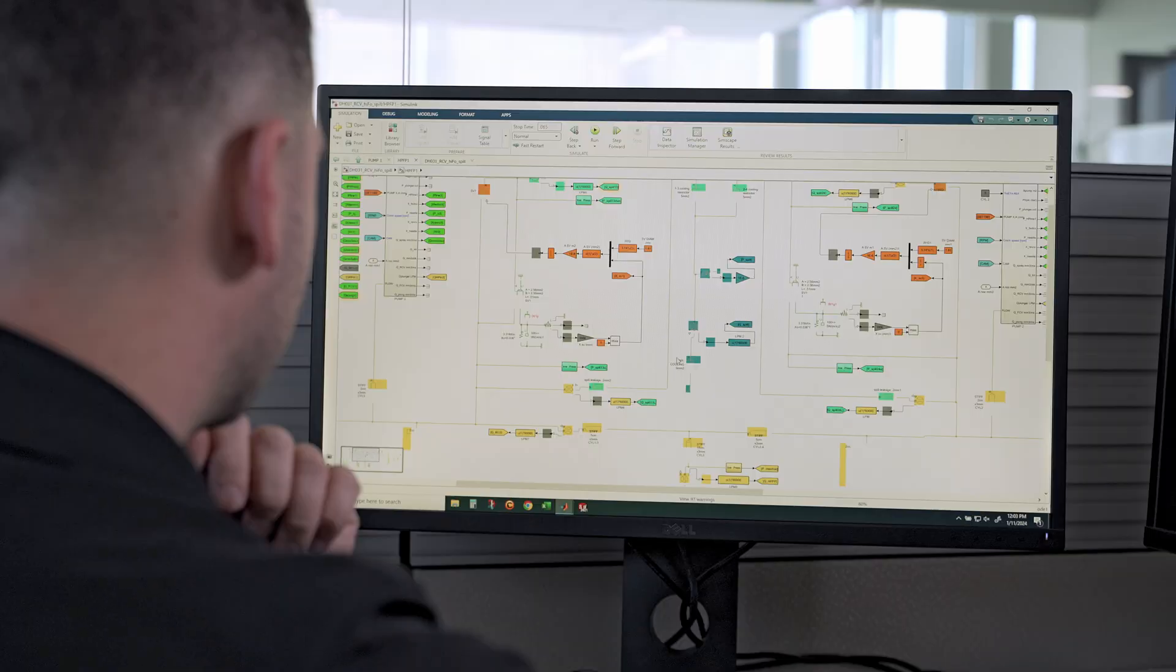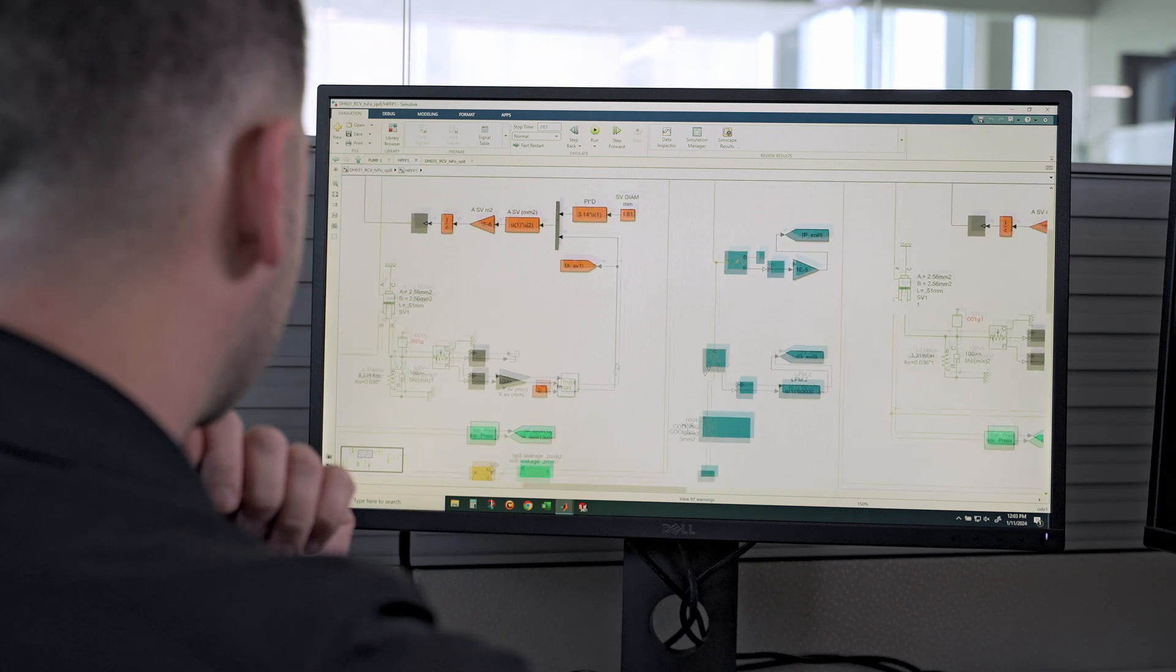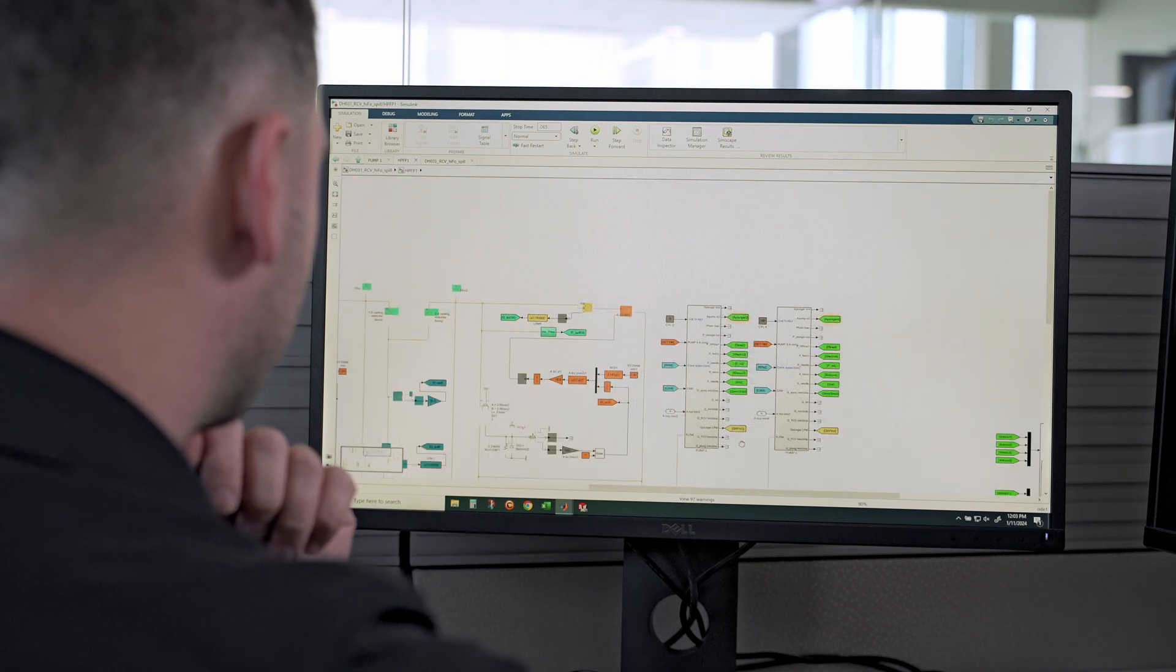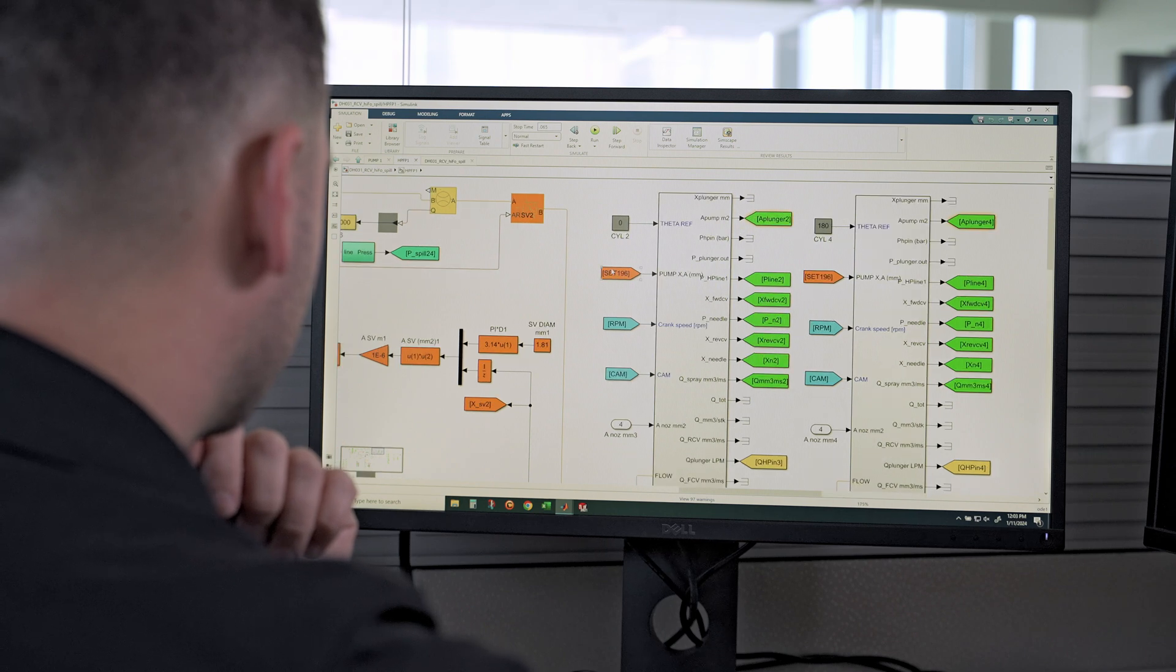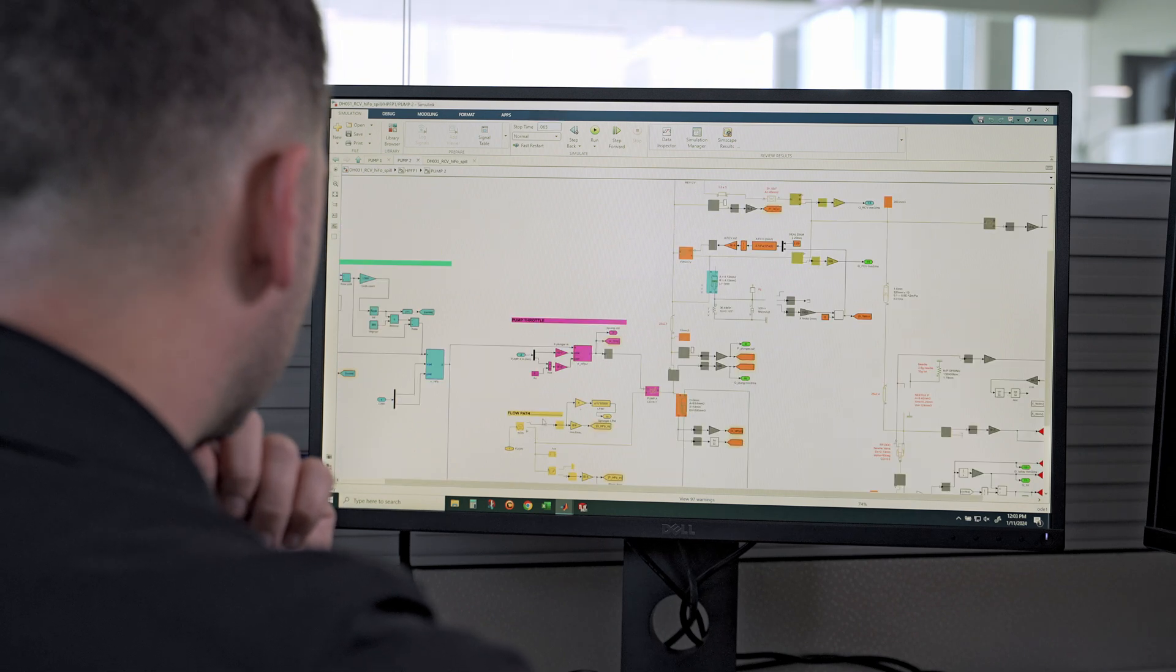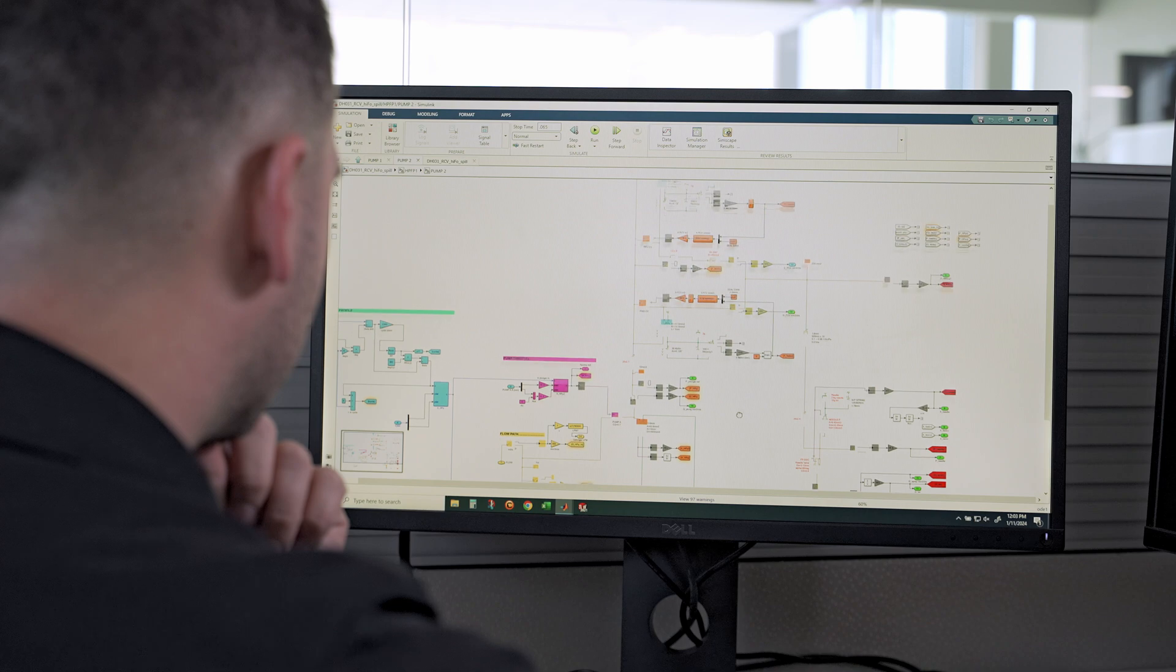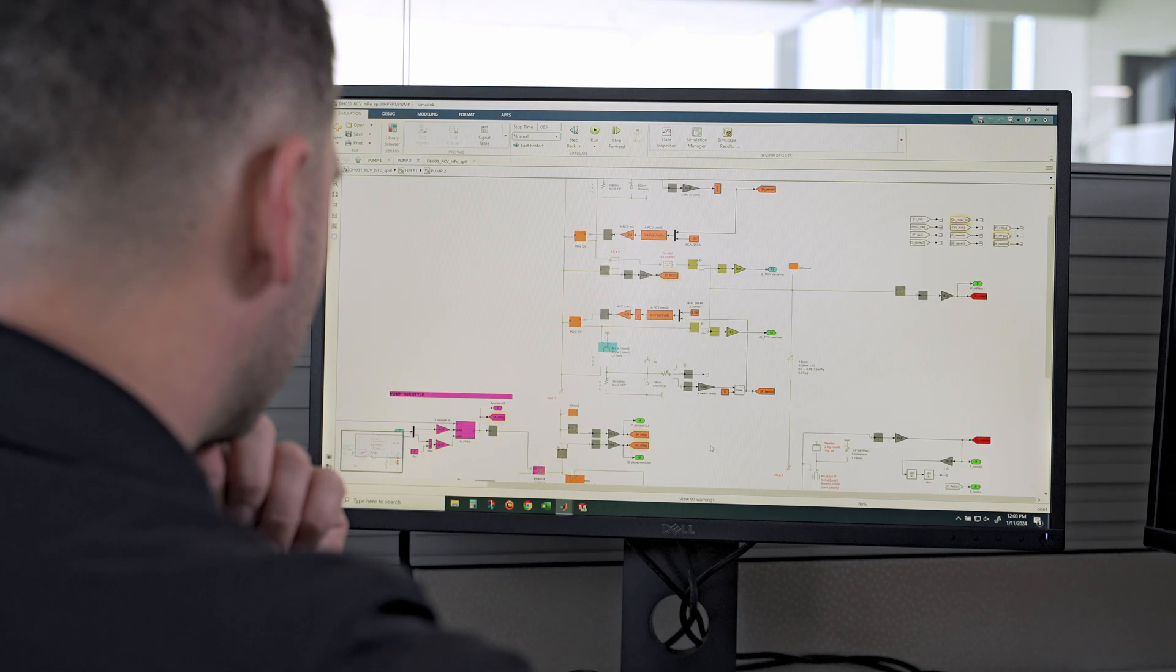What you see here is MATLAB Simulink and it's a model of our fuel system, our entire fuel system actually. This model is really helpful in knowing how different things might affect the fuel system if we want to change the design of one part or if something happens and there's a loss of pressure somewhere. We can predict what would happen and how it's going to affect the fuel system.